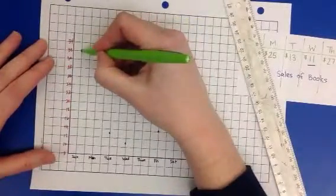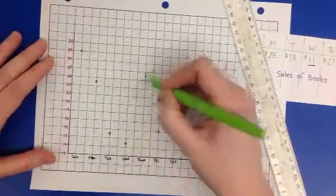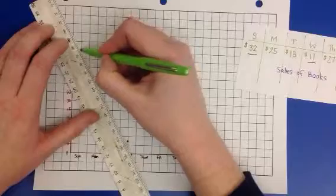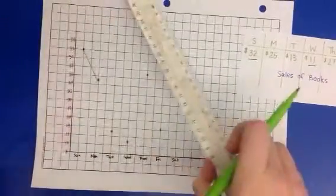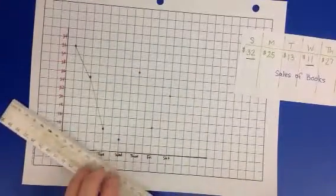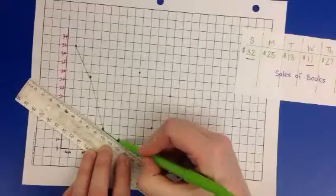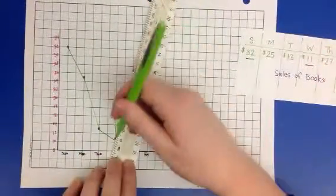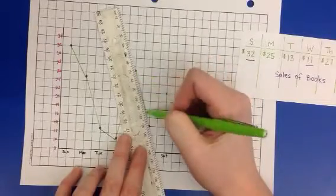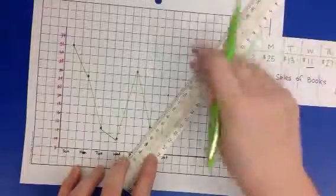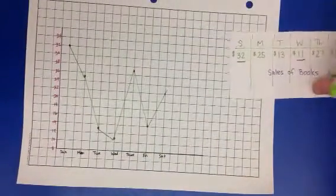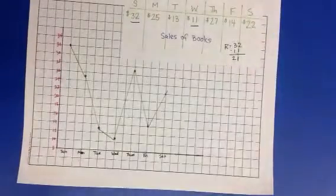Now that I have my data plotted on my line graph, I'm going to make the dots easier to see. I'm going to take my ruler and join them together - Sunday to Monday, Monday to Tuesday. These should be straight lines. Tuesday to Wednesday, Wednesday to Thursday, Thursday to Friday, and Friday to Saturday. And that is a line graph.